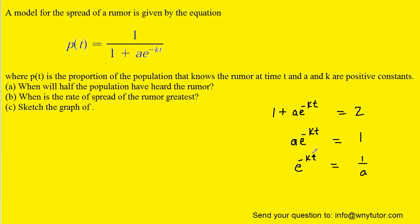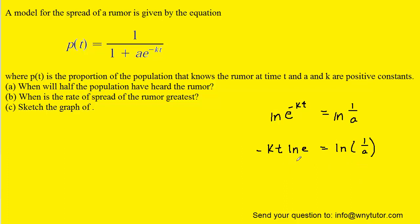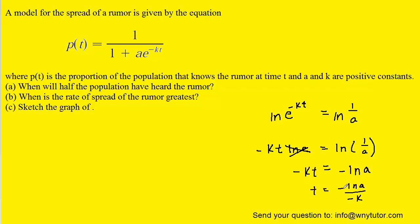To get the negative kt down from the exponent, we'll have to take the natural log on both sides. The natural log of e is 1, so we can remove that. On the right-hand side, through the properties of logarithms, we can expand that into ln of 1 minus the ln of a. Since the natural log of 1 is 0, we have negative ln of a on the right-hand side. Finally, we divide both sides by negative k, and the negatives cancel to become positive. So when t equals ln(a)/k, half of the population will have heard the rumor.